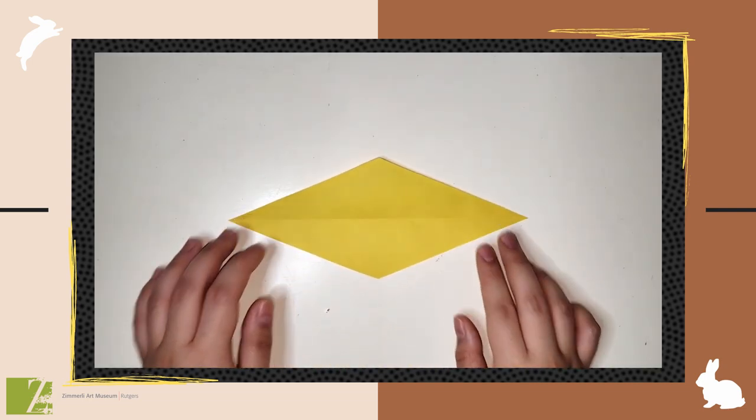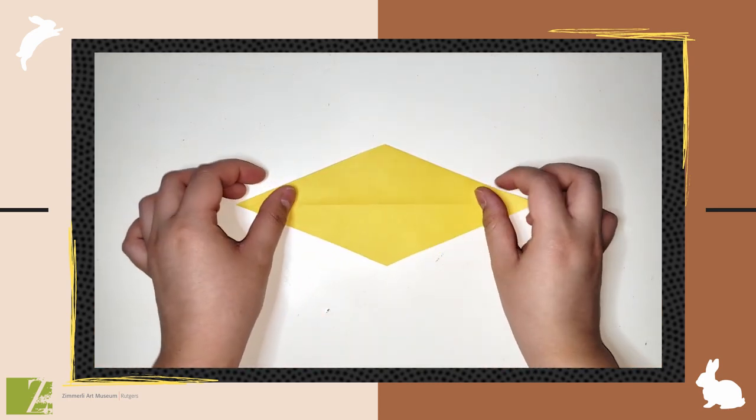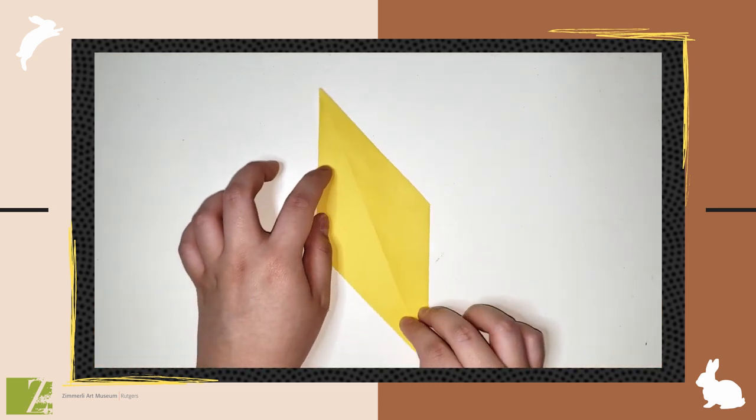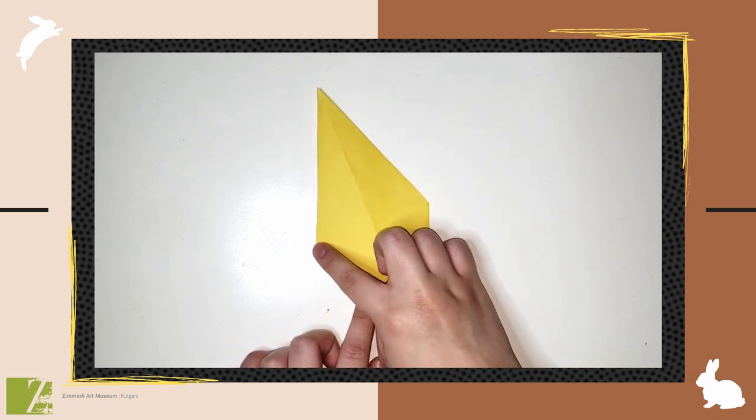Now, we're going to flip the paper on the opposite side. Make sure the crease is facing outward, not inward. We're going to first fold the top right outside edge to the bottom left outside edge.